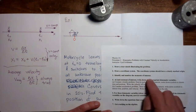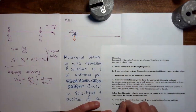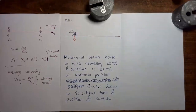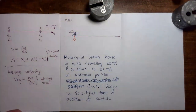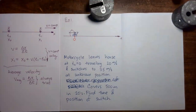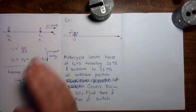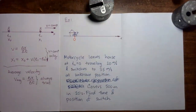Step three: identify and number the moments of interest. Let's go through the problem. If you read through the problem, what would be those moments where some particular event happens that we're going to have to analyze? Here I would invite you to pause the video, figure out what the moments of interest are, and draw those moments of interest into your sketch.